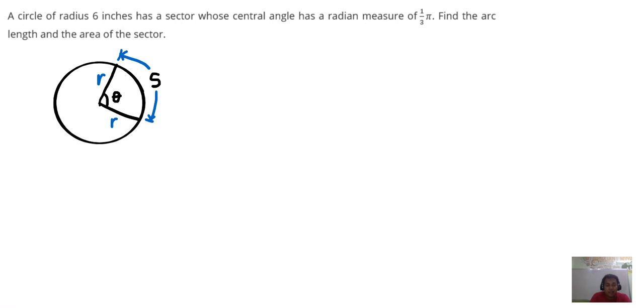the arc length is equal to the radius times the central angle theta. So take note that when we solve for the arc length, theta should be in radians. We are already given one-third pi, and one-third pi is already in radians, so we do not need to convert anything. We are also given a radius of six inches right there.